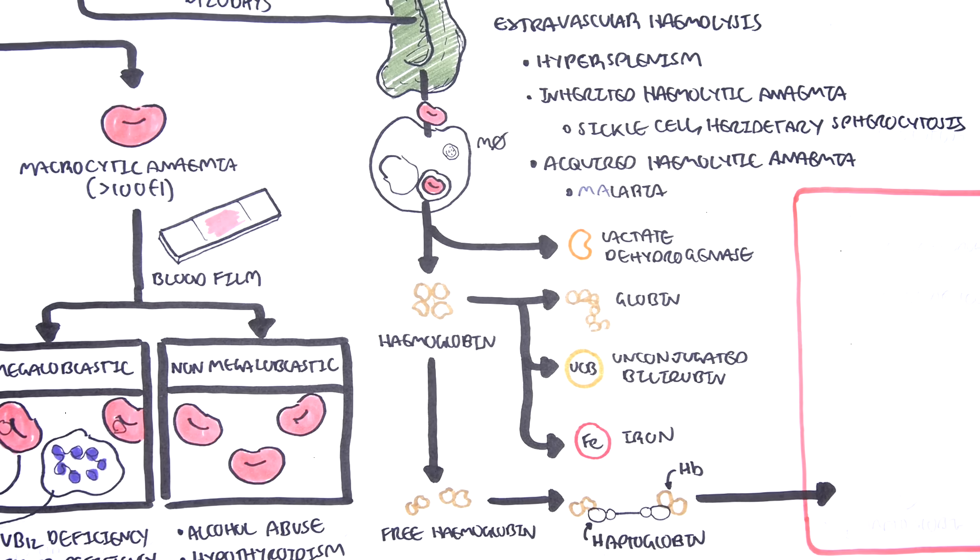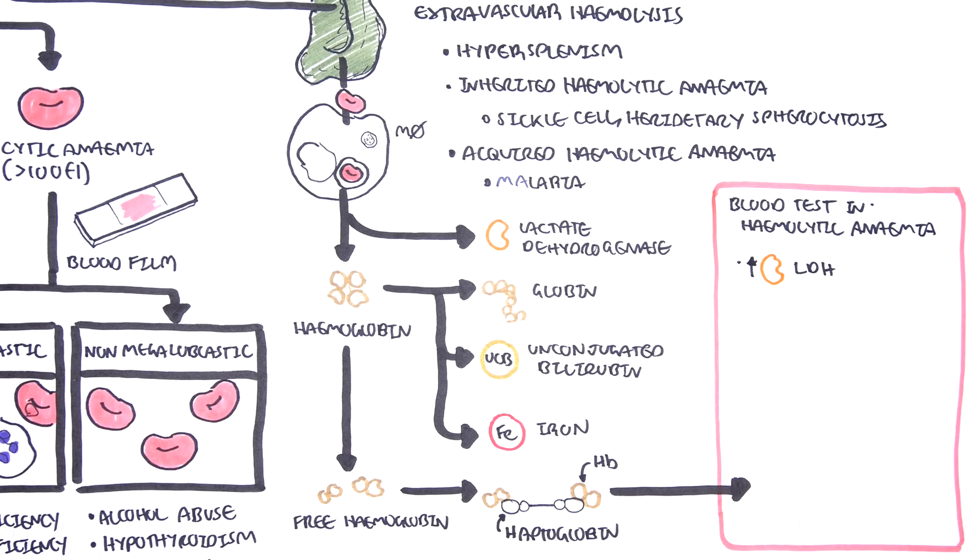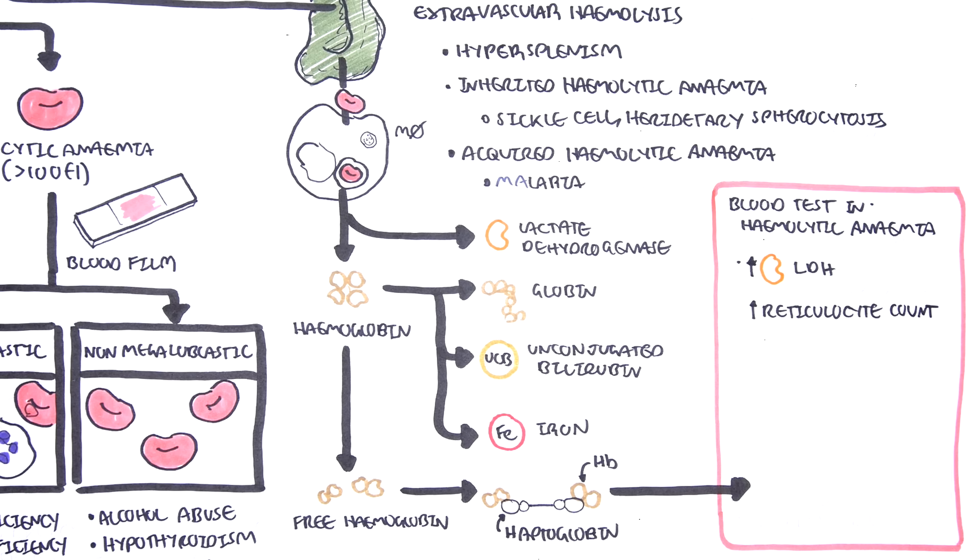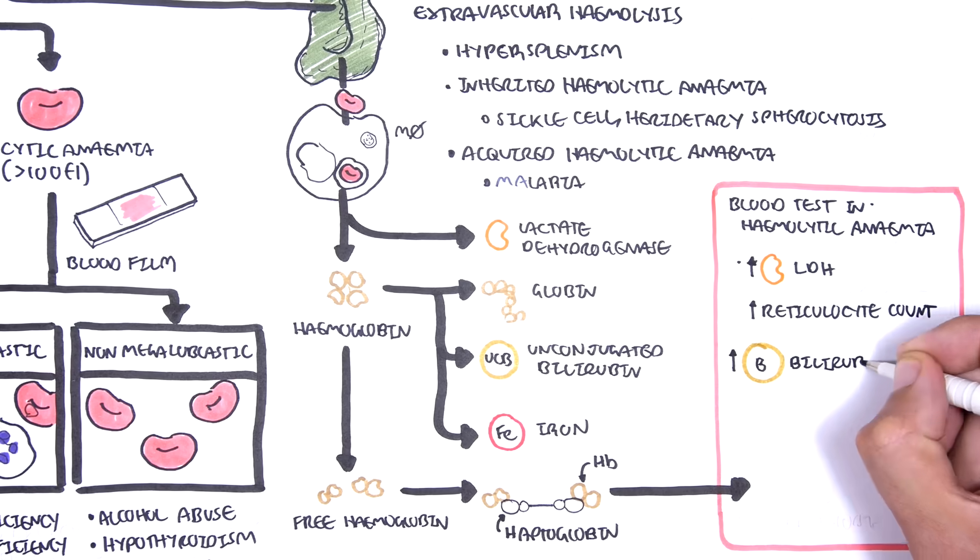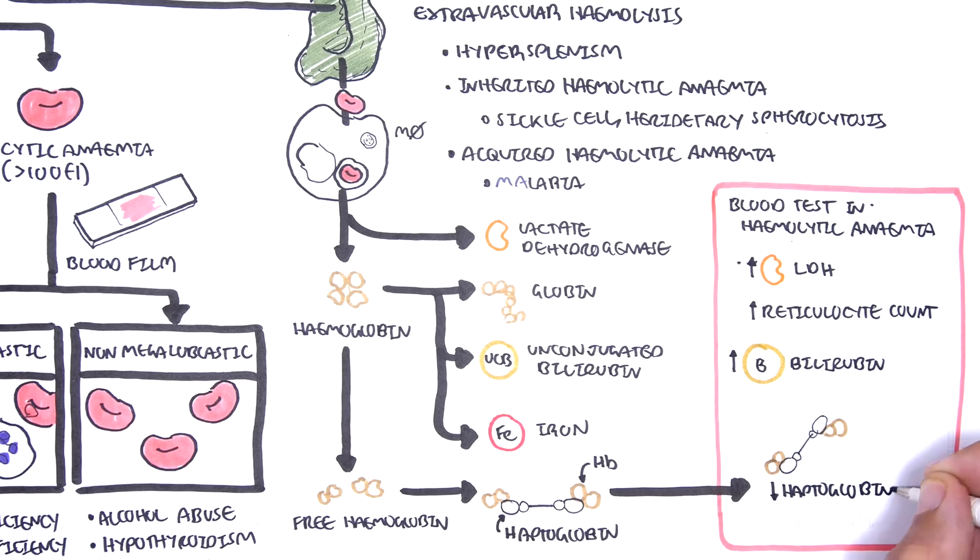Therefore blood tests to order in someone with suspected hemolytic anemia include measuring their lactate dehydrogenase which should be elevated, the reticulocyte count which should be elevated because the body is trying to compensate by producing more red blood cells, there should be an increase in bilirubin which also means the person can present with jaundice, and finally low haptoglobin levels because they are bound to free hemoglobin and are being cleared up by the body.